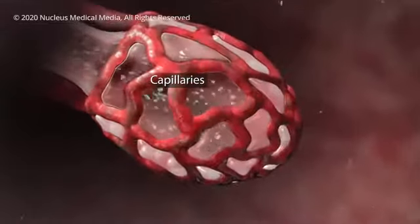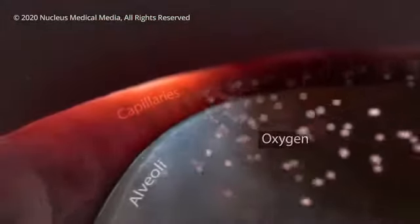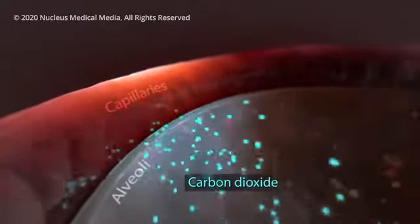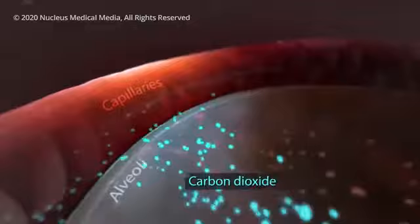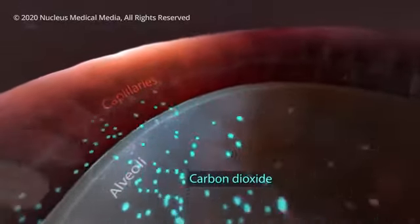Small blood vessels called capillaries surround your alveoli. Oxygen from the air you breathe passes into your capillaries. And then carbon dioxide from your body passes out of your capillaries into your alveoli so that your lungs can get rid of it when you exhale.